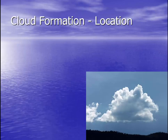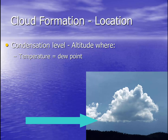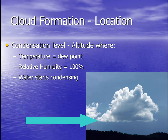So we have our ingredients. We need to talk about the location — where do clouds form? Well, if you notice a cloud, a typical cloud has a nice flat bottom. This is what we call the condensation level. It's an altitude, or a location in the Earth's atmosphere, where the temperature is equal to the dew point. As we talked about previously, if the temperature and dew point are equal, relative humidity must be 100% in this location. This is the place where water starts condensing out of the air, and of course, that's the place where clouds form.